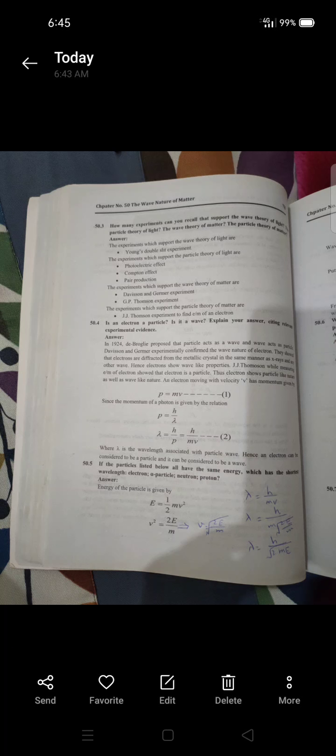An electron moving with velocity v has momentum given by p equals mv. Since the momentum of a photon is given by p equals h over lambda, then lambda will be equal to h over p, and p is mv, so lambda equals h over mv, where lambda is the wavelength associated with the particle wave. Hence, an electron can be considered to be a particle and it can be considered to be a wave.